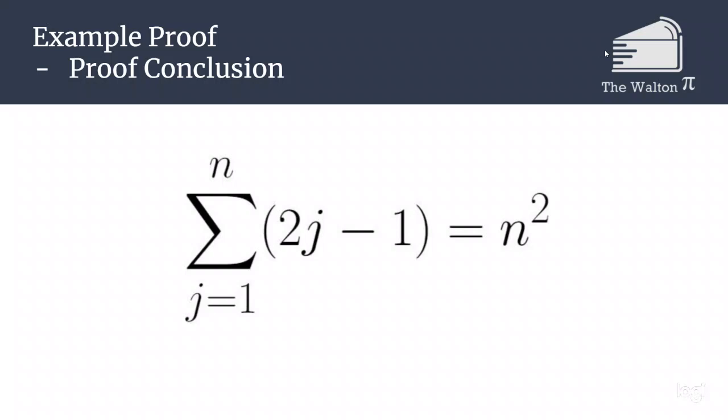Therefore, our inductive step has been successful, and we have completed our proof that the sum from j equals 1 to n of 2j minus 1 is equal to n squared.